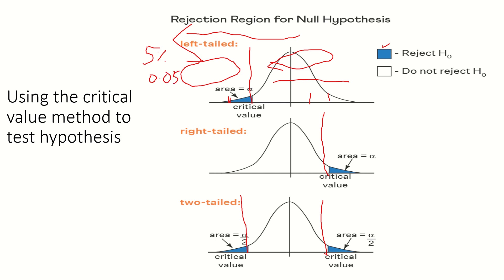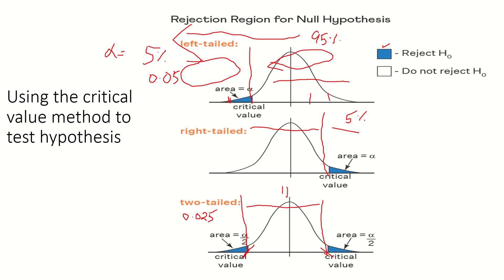With alpha equal to 0.05, we have a 95% acceptance region and 5% rejection region. In a two-tail test, the alpha value of 5% is divided into two equal parts of alpha/2, which is 0.025 on each side. We refer to the critical value to determine whether the test statistic falls within the acceptance region, in which case we accept H0, or in the rejection region.